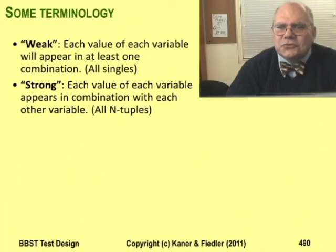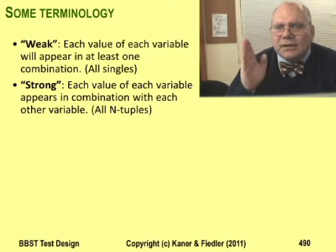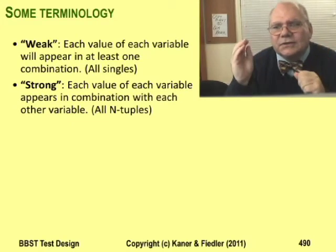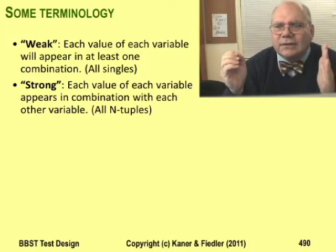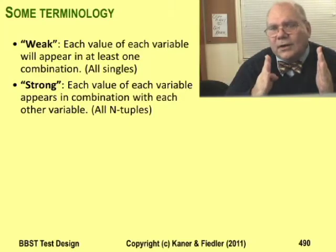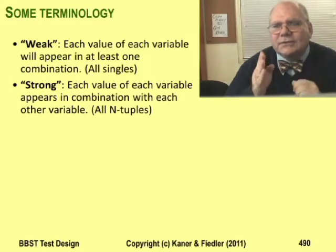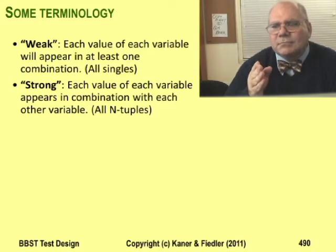Finally, Jorgensen distinguishes between weak and strong testing. His weak testing is what I've called all singles coverage. His strong testing achieves all n-tuple coverage. All pairs coverage is an example of a level of coverage that lies in between weak and strong.